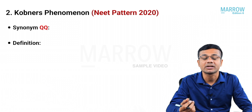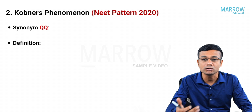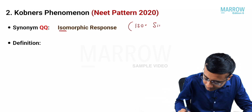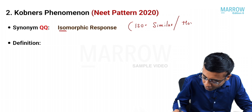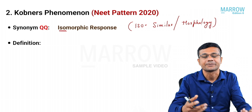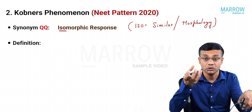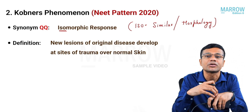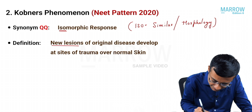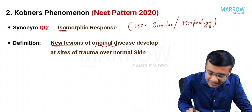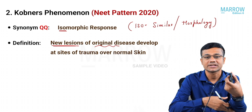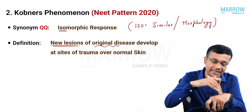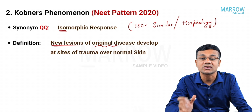The second named phenomenon is Koebner's phenomenon, also referred to as the isomorphic response. 'Iso' means similar and 'morphic' means morphology — similar morphology lesions. Koebner's is defined as new lesions of the original disease appearing along the line of trauma over normal skin. For example, if you have psoriasis on your elbows and get a cut on your hand, the same psoriasis lesions appear along the line of trauma.